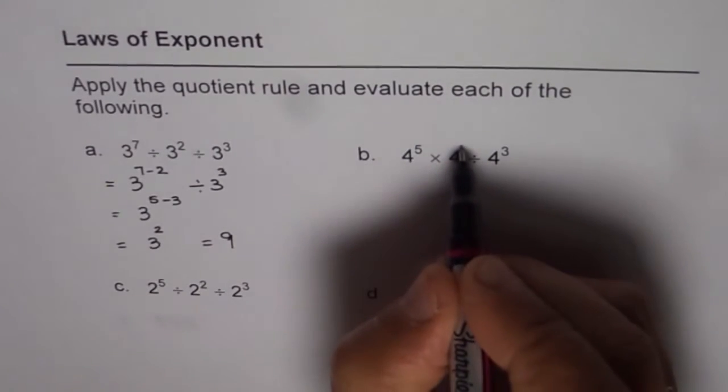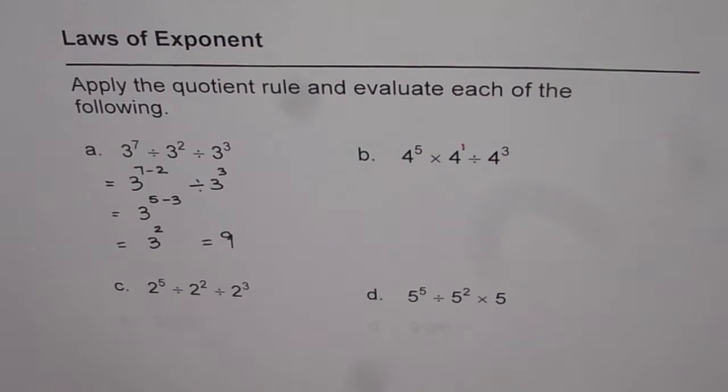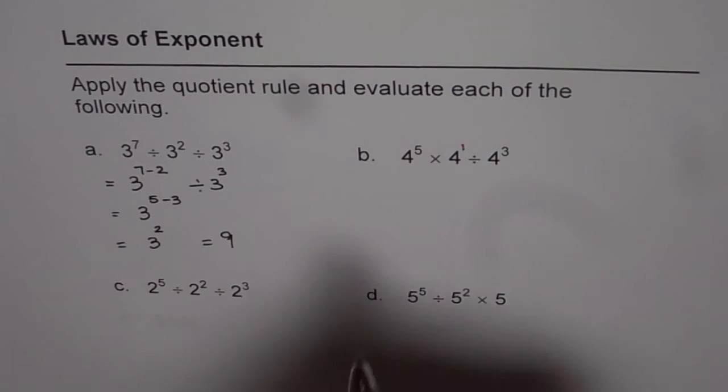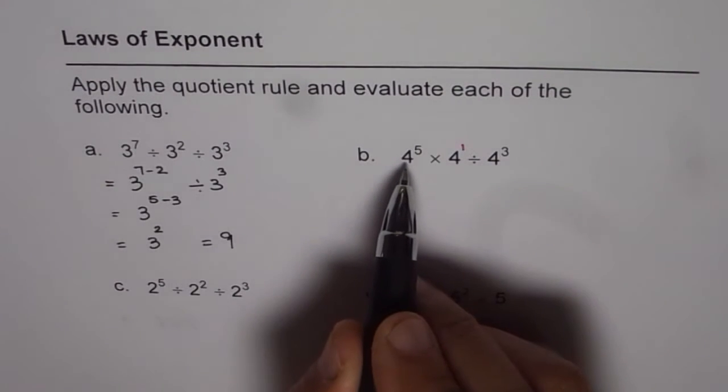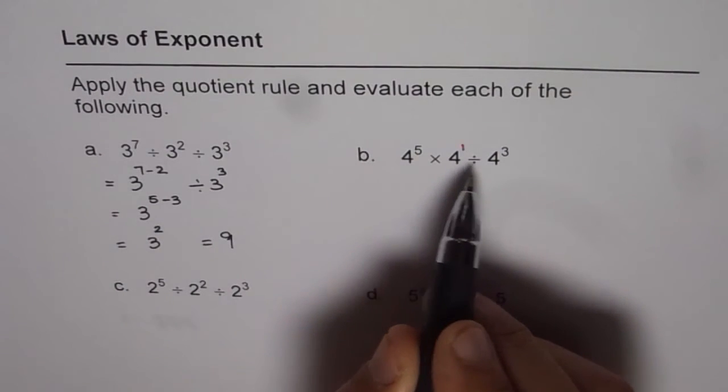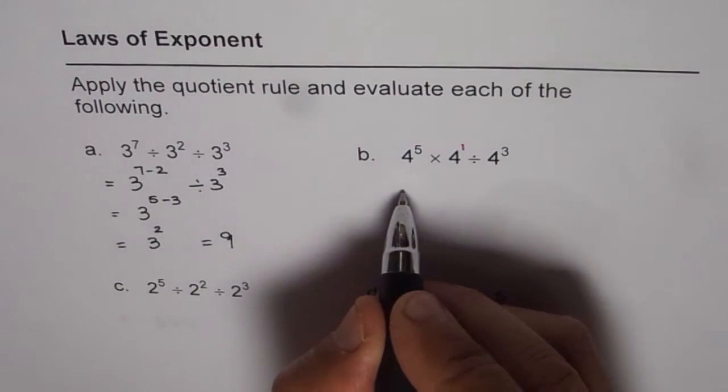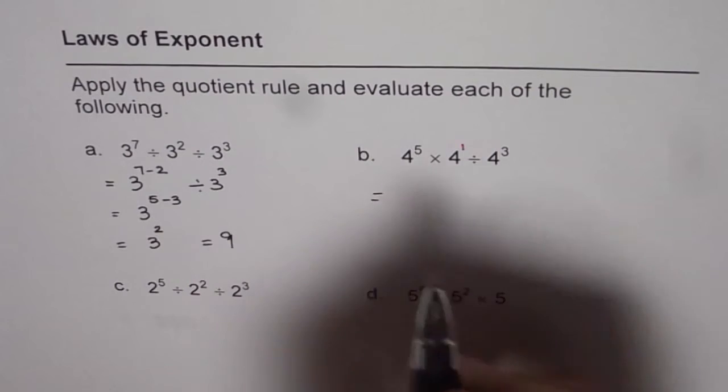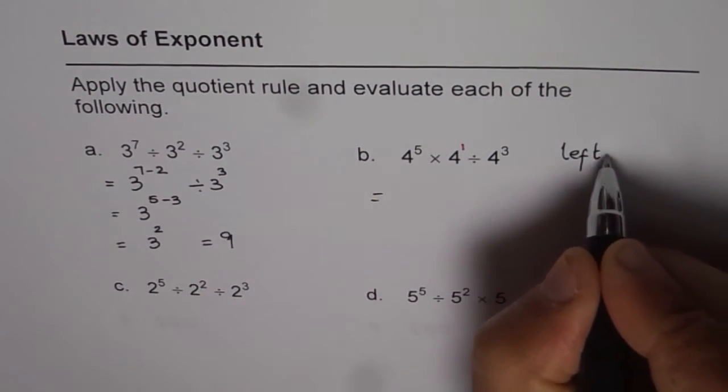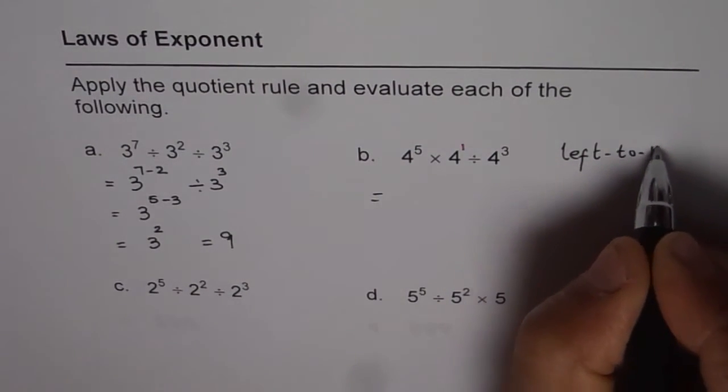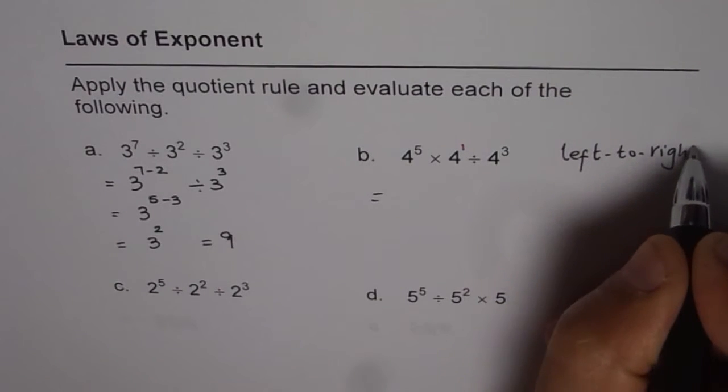So there is no need to write, but I am just writing 1 here just to tell you that you have to assume it to be 1. Anything to the power of 1 is the same thing. So here we will apply the power and quotient rule together. So we will have, first, we will always move from left to right. So that is key.